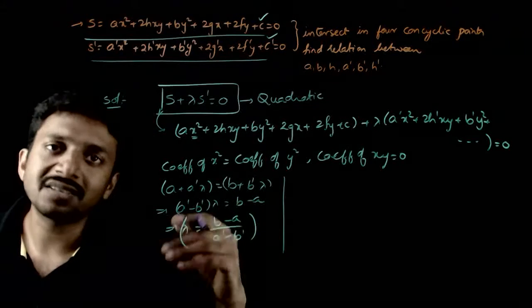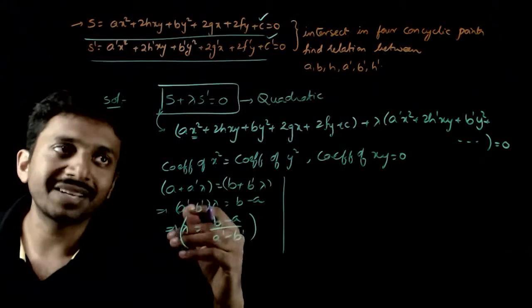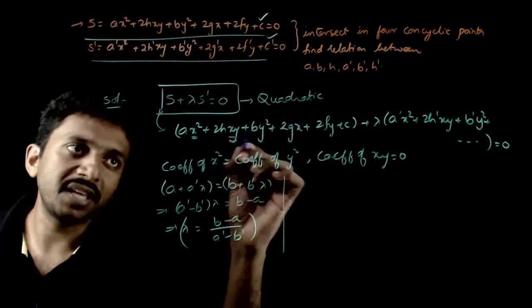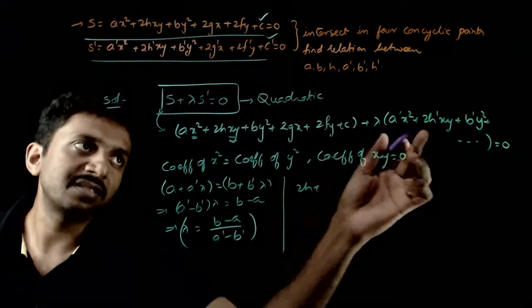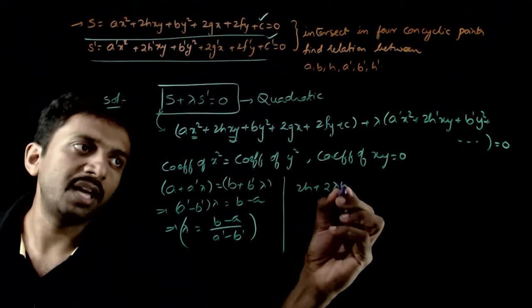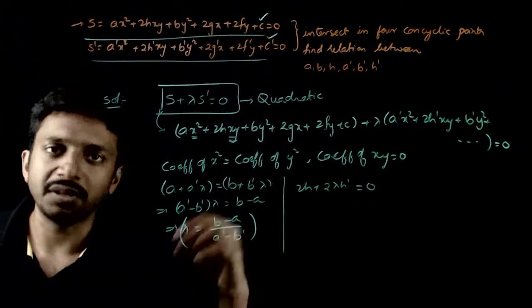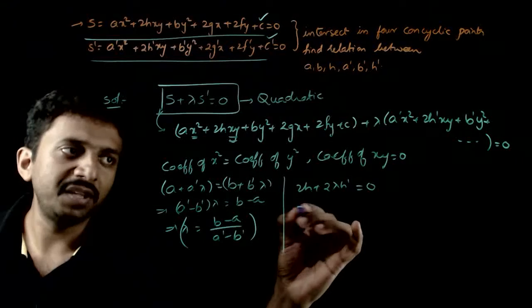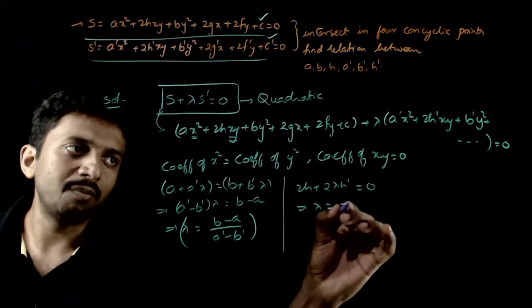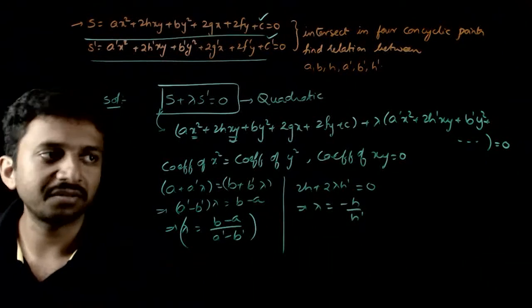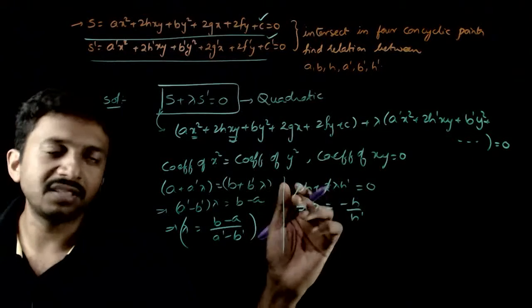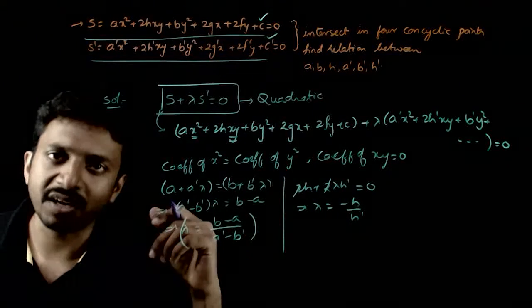Next, applying the second condition — coefficient of XY equals zero: 2H + 2λH dash = 0. From here, λ = −H / H dash.